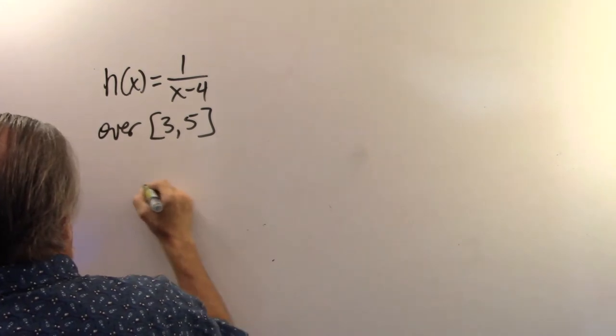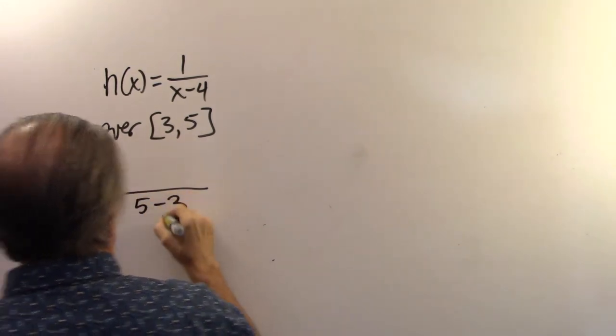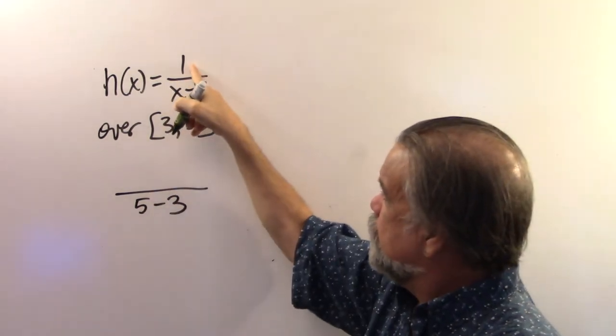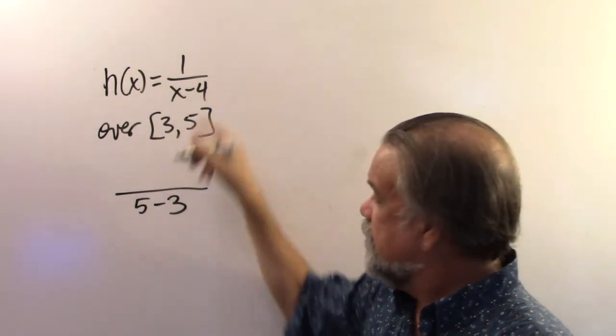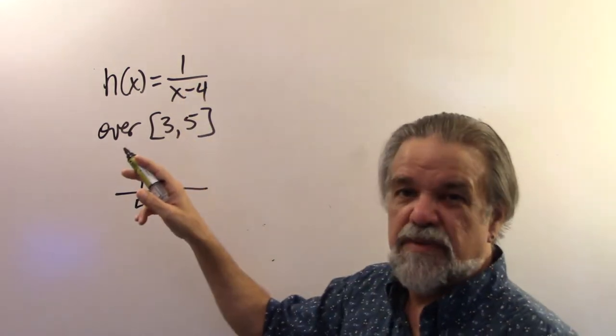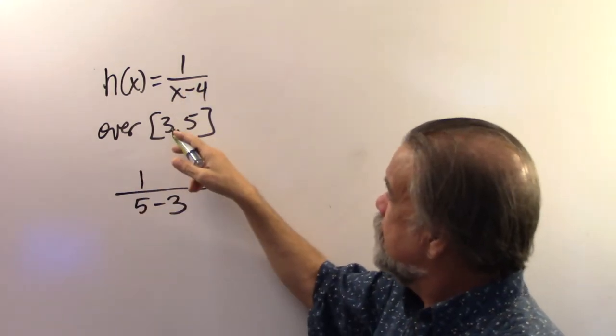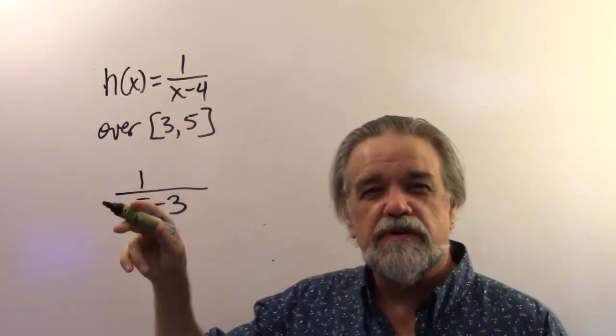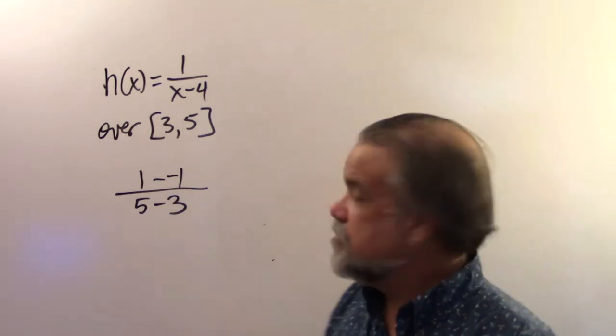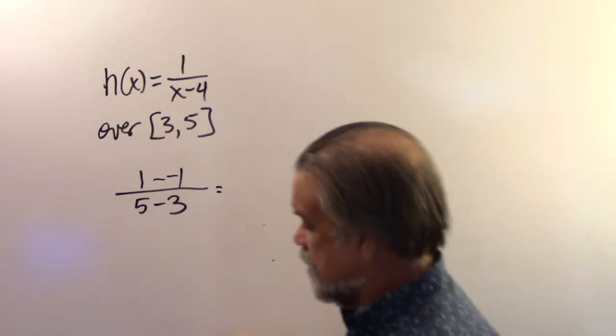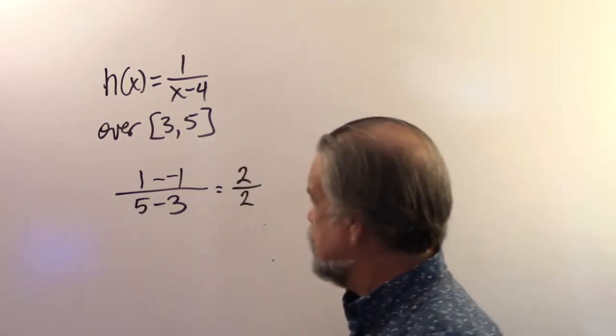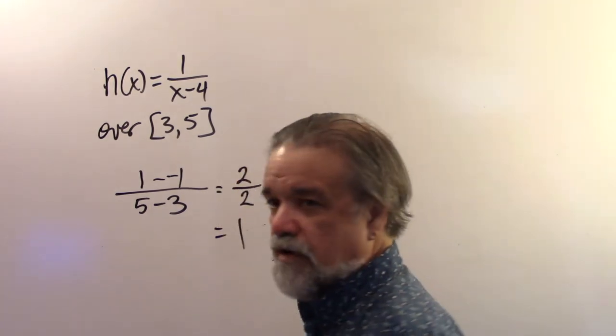We know that it's going to be 5 minus 3 in the denominator. So now we just got to figure out what's f of 5. It's going to be 1 over 5 minus 4, that's 1 over 1, that's 1. And f of 3 is going to be... Oh sorry, I said f, I meant h. h(3) is going to be 1 over 3 minus 4, that's 1 over negative 1, that's negative 1. So 1 minus negative 1, also known as 2, over 5 minus 3, also known as 2. And so this gets us a slope of 1.